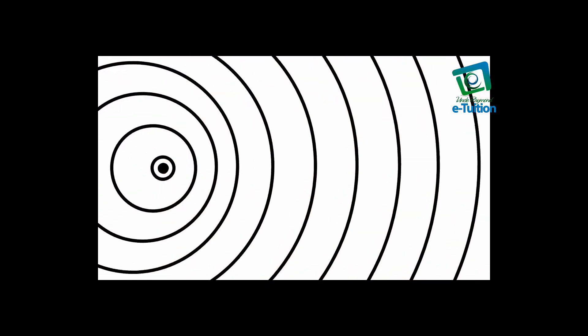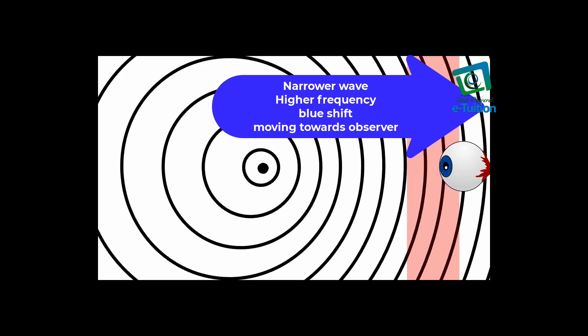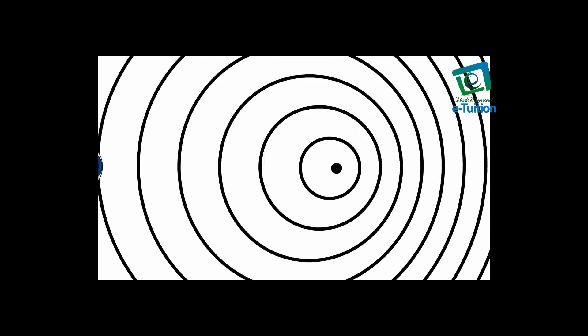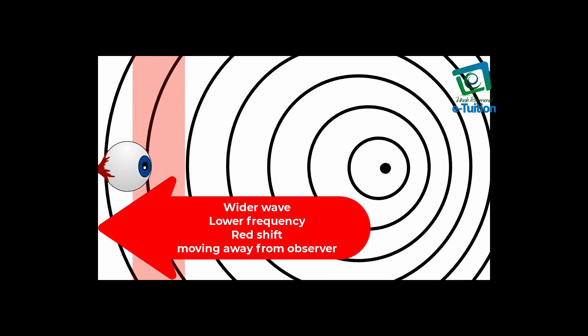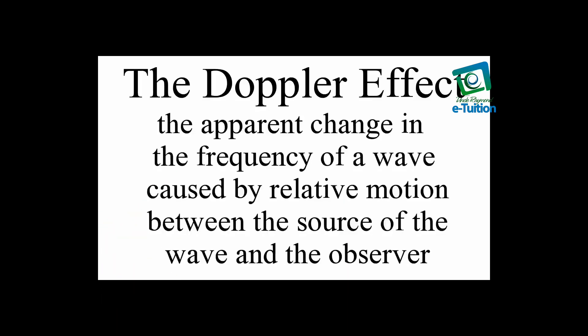If our object is moving towards a stationary observer, these bunched up waves are observed at a high frequency. And if the object is moving away from the stationary observer, the waves are being observed at lower frequency. So that is Doppler effect. The apparent change in the frequency of a wave caused by relative motion between the source of the wave and the observer.